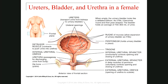Inside the bladder, you can see many rugae. The rugae are folds which help expansion of the urinary bladder when it fills. The muscle in the wall of the bladder is a thick muscle with a specific name — it is called the detrusor muscle, and it contracts when we want to do urination.